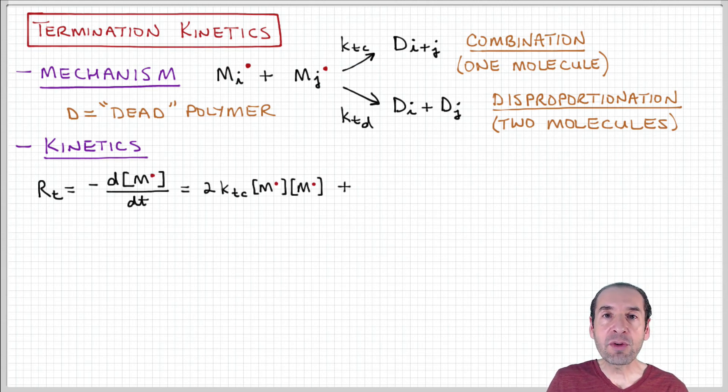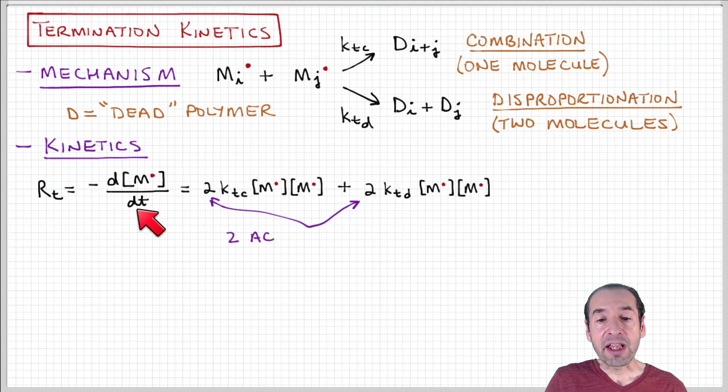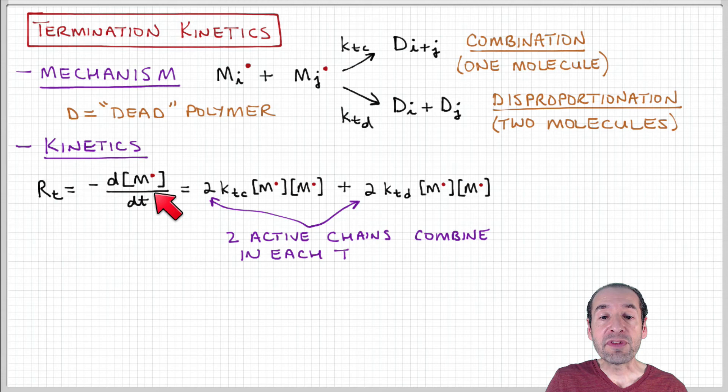Let's think about how we could represent this in a kinetic framework. The overall rate of termination can be written in terms of the rate of consumption of active chains, and then we can add up the rate law associated with the kinetics of each of these steps.